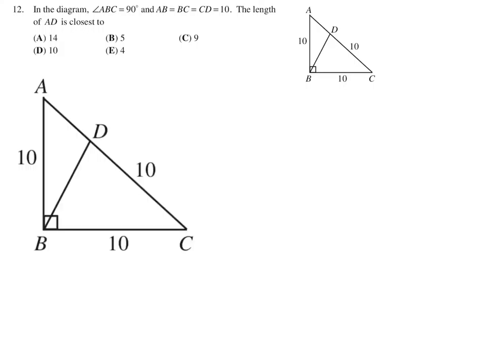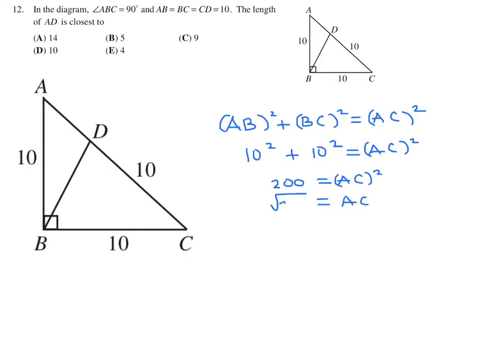In the diagram, ABC is equal to 90. AB equals BC equals CD. The length of AD is closest to. So this is a straightforward question involving Pythagoras. AB squared plus BC squared is equal to AC squared. And then plug in what we know. AB is 10. BC is 10. And that will help you solve for AC. So this becomes 200 is equal to AC squared. And therefore AC is the root of 200.